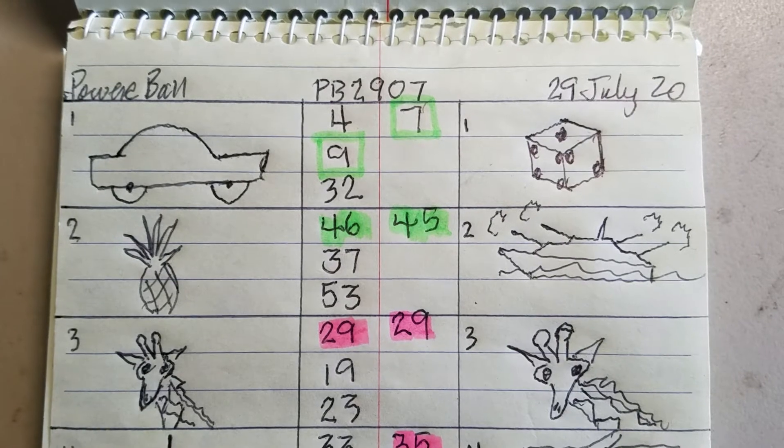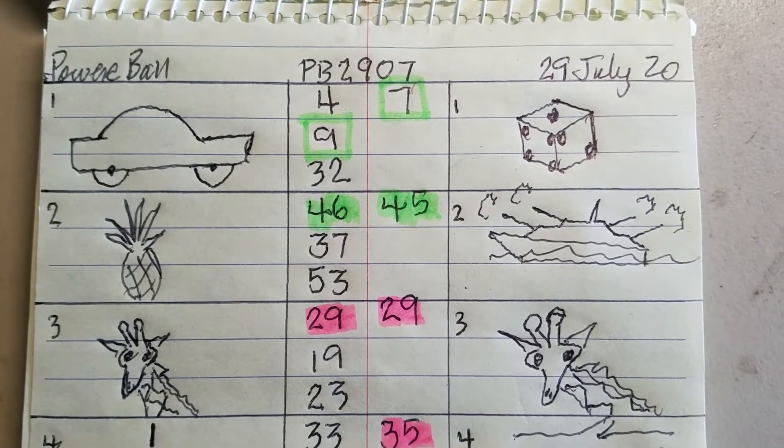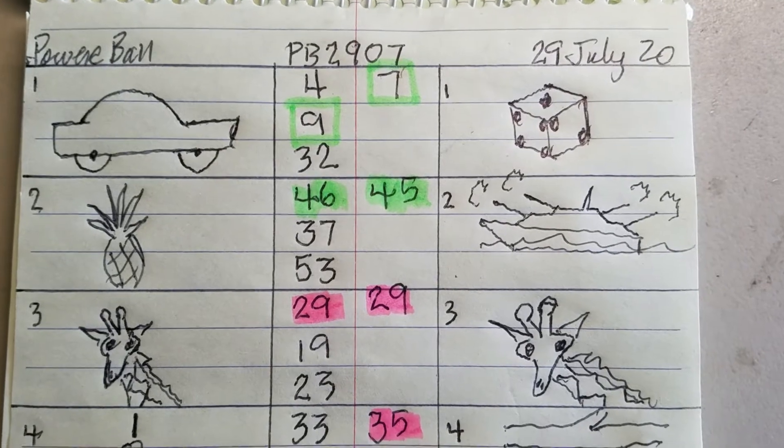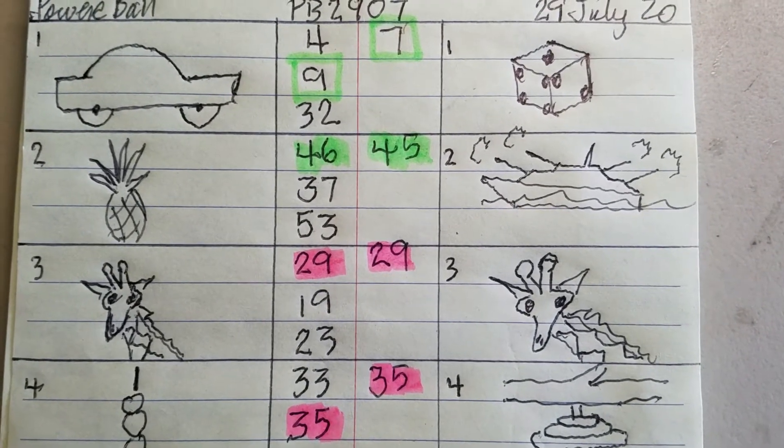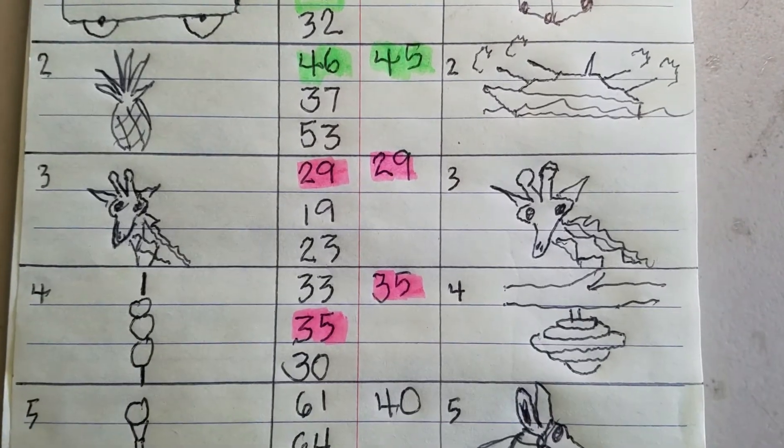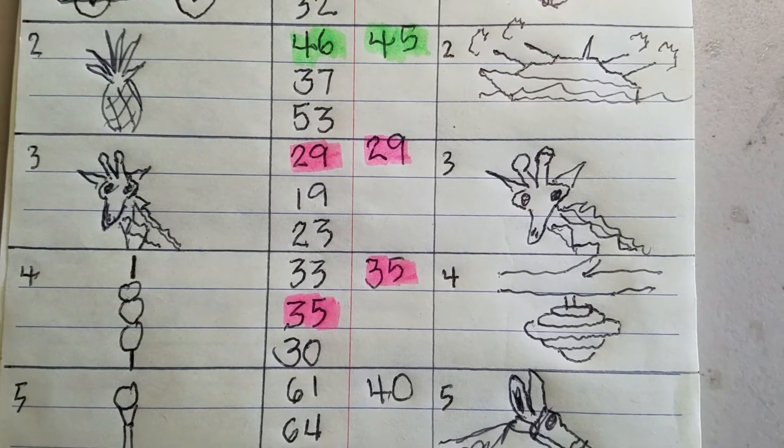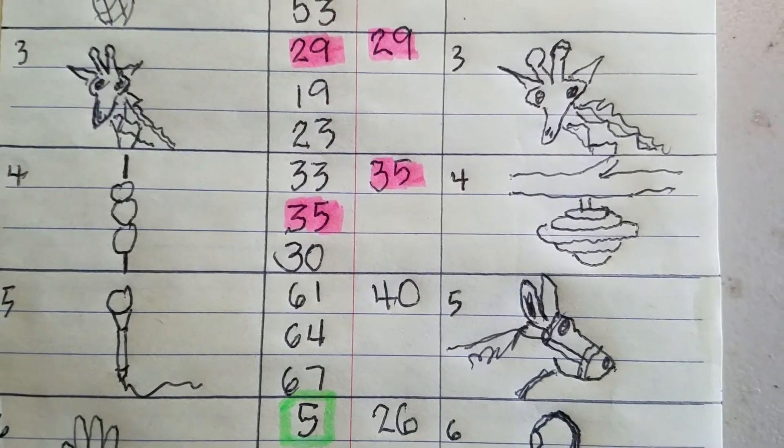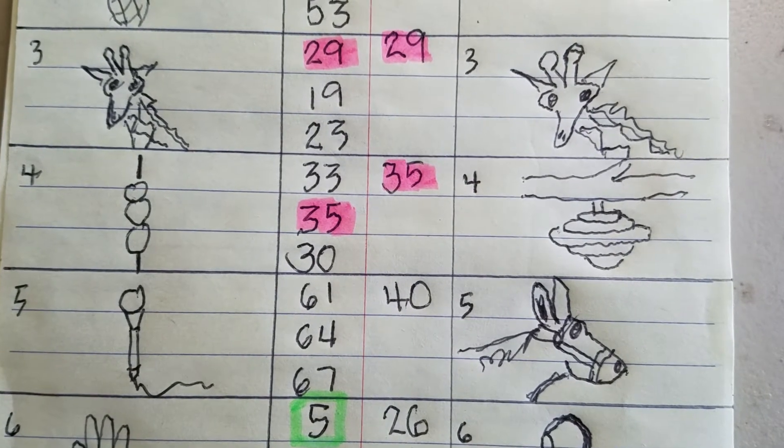The first number was seven, and that's nice. Second number is 45 which is the Mighty Moe. And the third number, this is my wife's favorite character, 29 the giraffe. And the fourth number was 35 which is a beehive, and the fifth number was a mule, number 40.